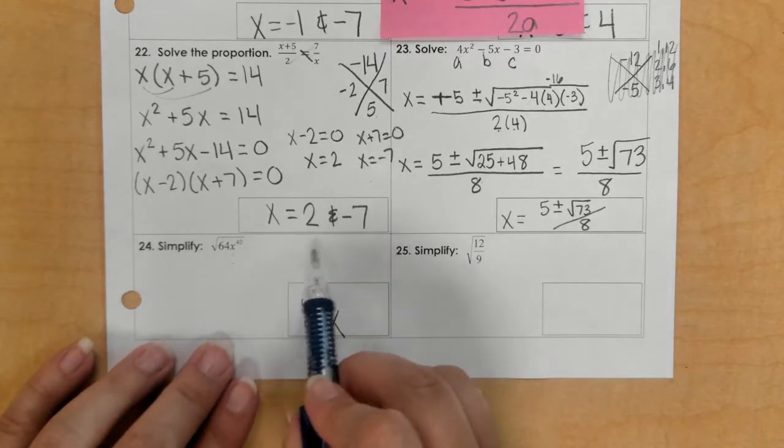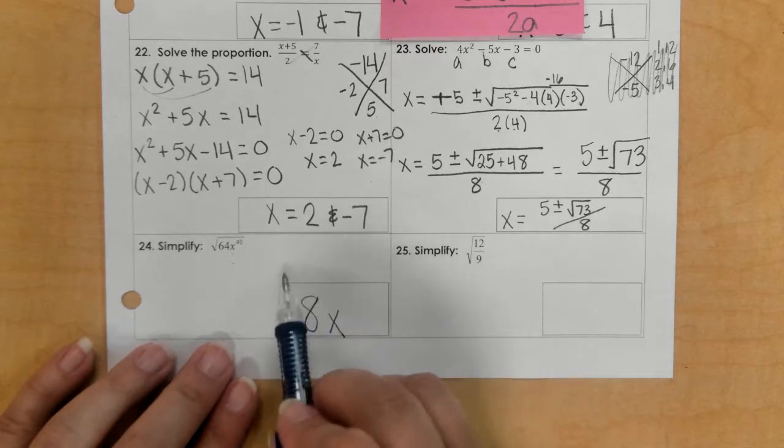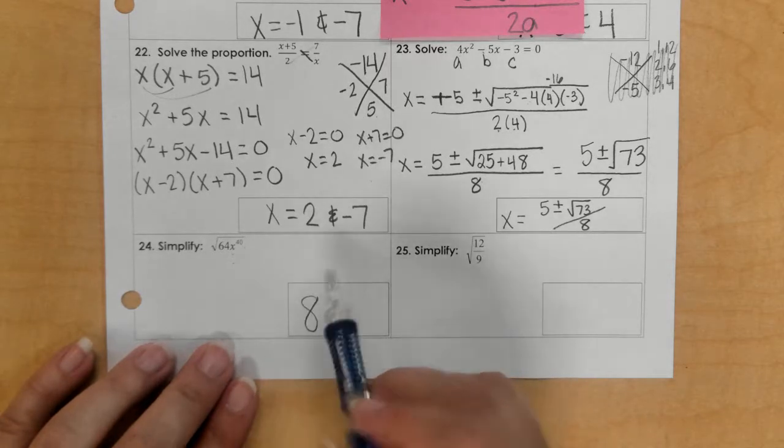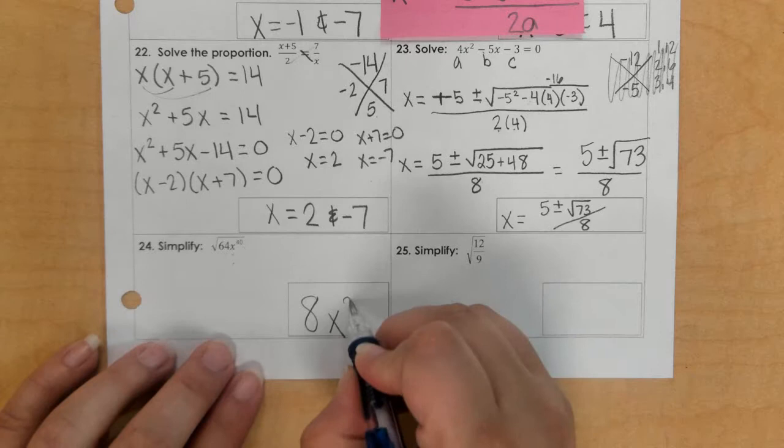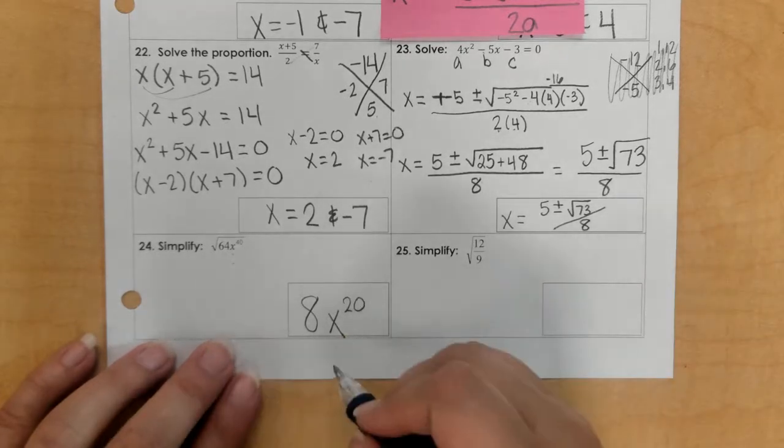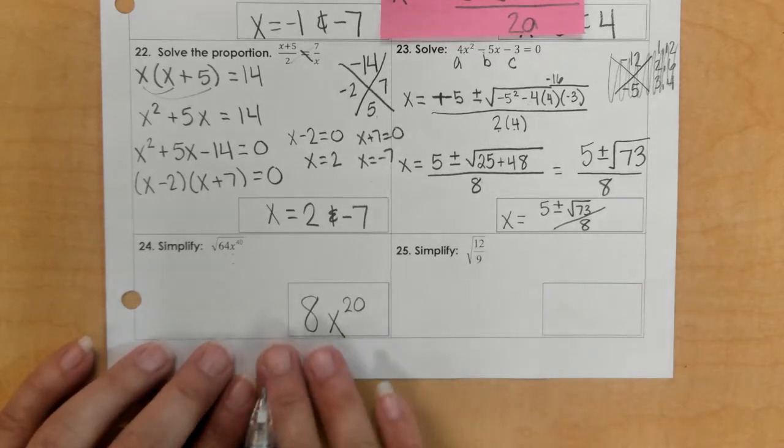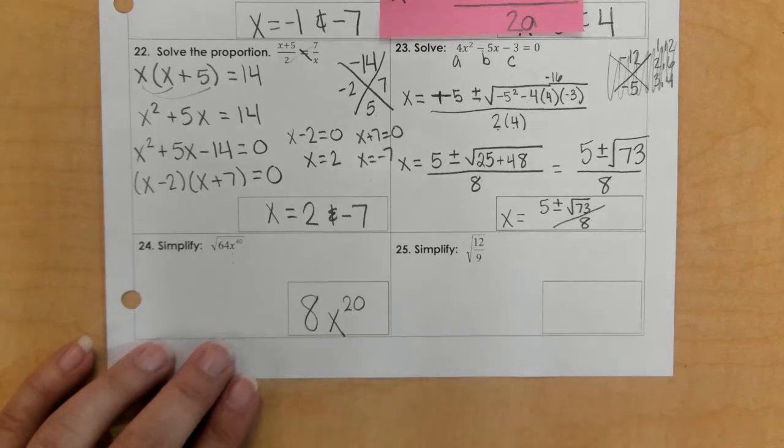For 40, if we had 40 X's, then we would just figure out how many pairs we have, which is half of the 40, which is 20. There are no leftovers, so I don't need to put anything inside the radical. I am done with 24.